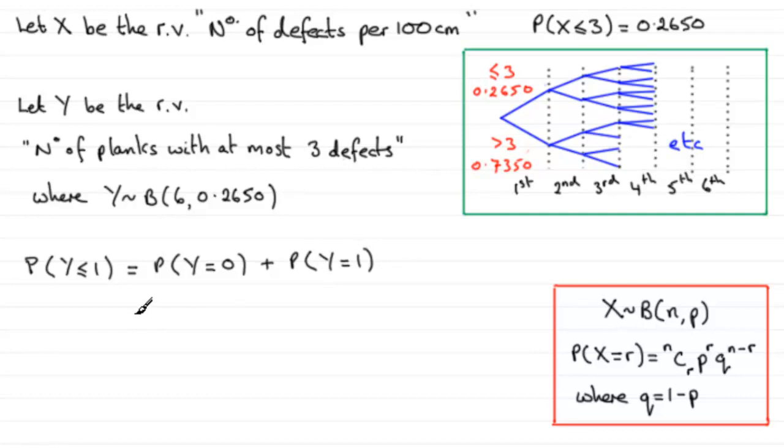So if we work these probabilities out through the formula, for the probability that Y equals 0, it's going to be 6C0, and then the probability of success which is 0.2650, that's going to be to the power 0.